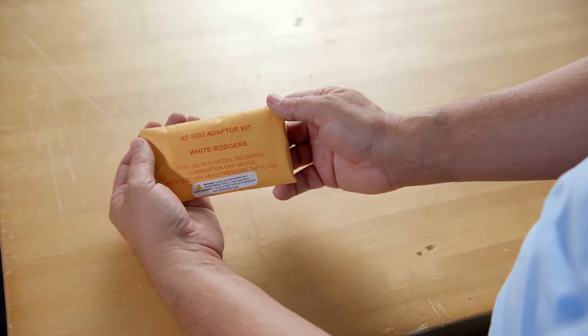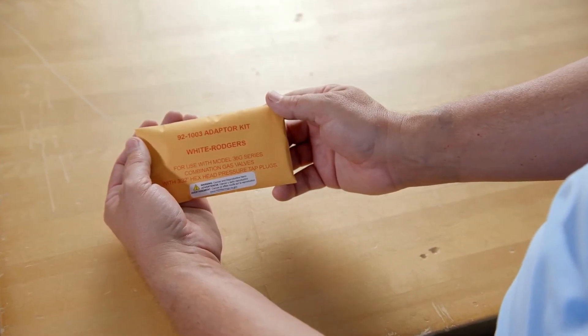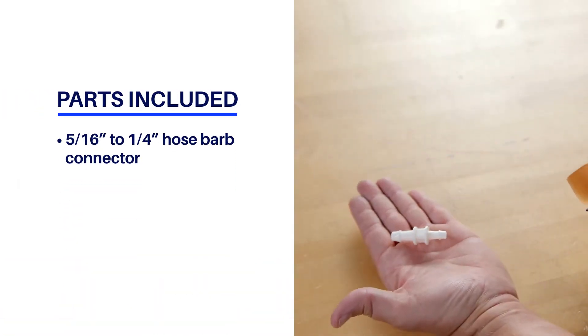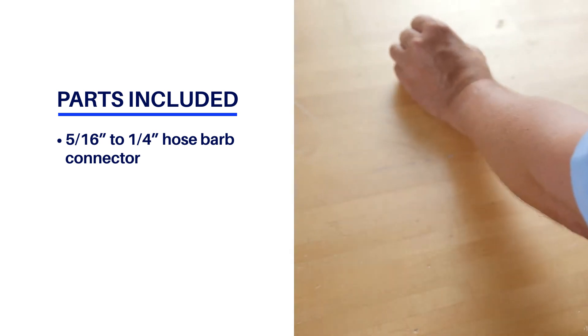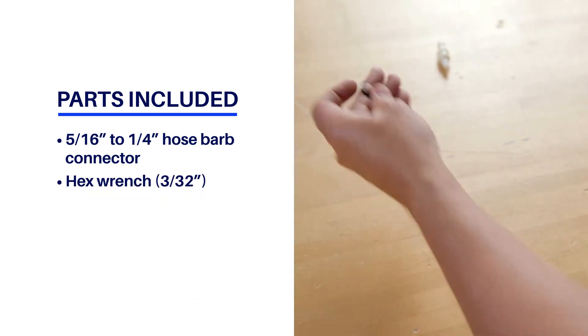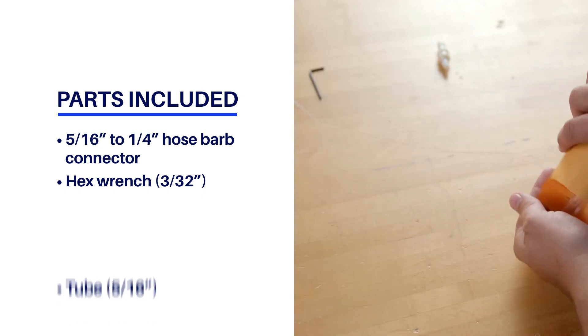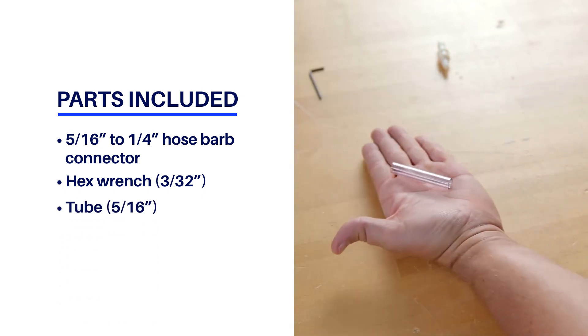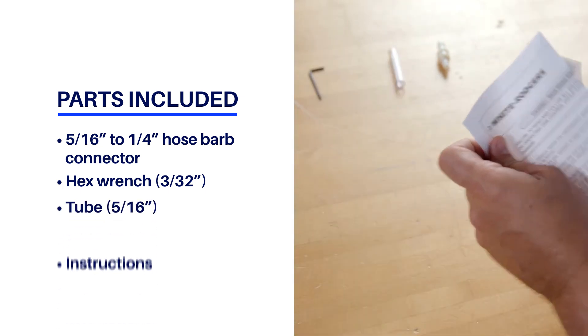If needed, a White Rogers F92-100-03 adapter kit can be purchased separately. The kit includes a quarter-inch to 5/16th barbed adapter, a 3/32nd Allen wrench for the post-set screws, a 5/16th hose, and easy-to-follow instructions.